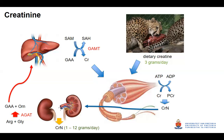Looking at creatinine excretion in cheetahs, we are getting anywhere from one to 12 grams per day. At the higher end, these cheetahs may be manufacturing somewhere up to nine grams of creatinine per day, which is tremendous. In a high-performance male human athlete, the maximum would be about two grams per day. So this is substantially more, and it is quite interesting to understand why they are actually producing so much creatine and creatinine.